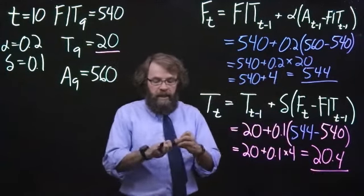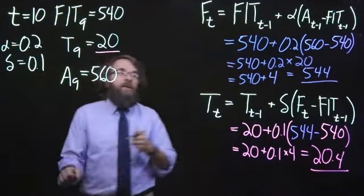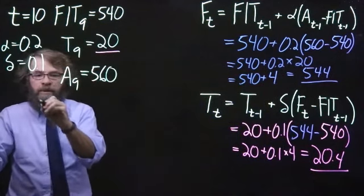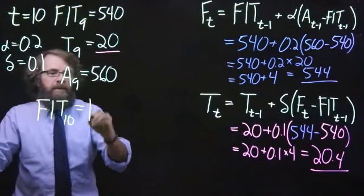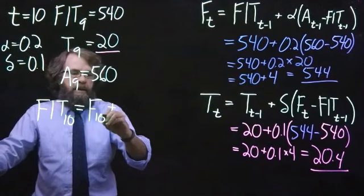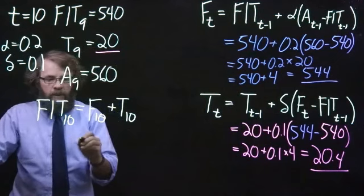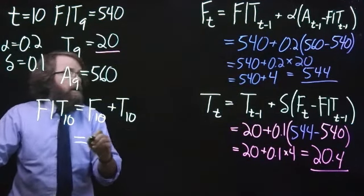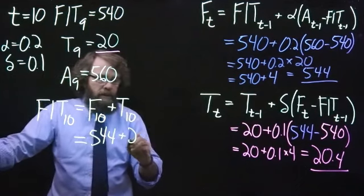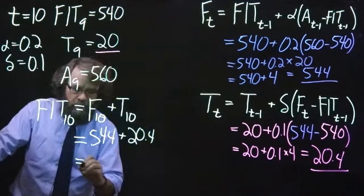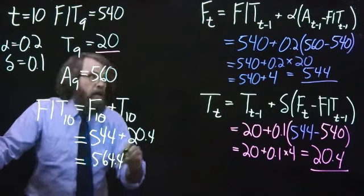Now our last step is to put those two pieces together to get a forecast for the next period. So to make a forecast including the trend for period 10, we will take the level that we just calculated, F10, plus the trend that we just calculated, T10. So we will have 544 plus 20.4, which gives us 564.4.